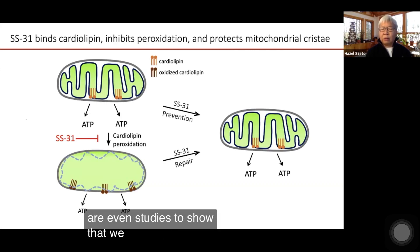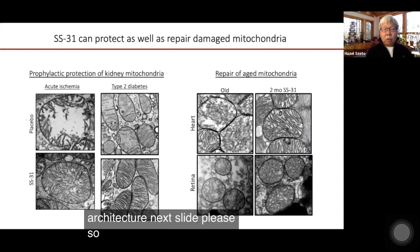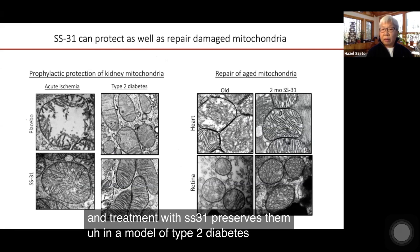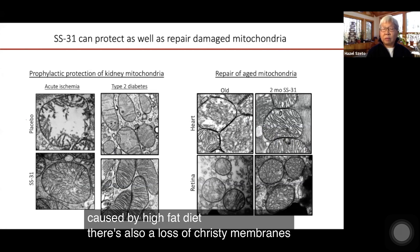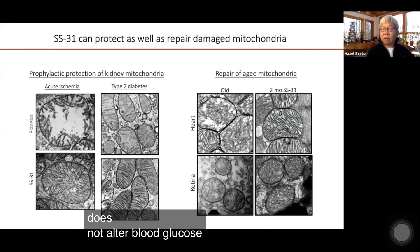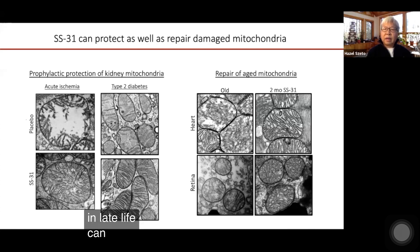There are studies showing that treatment with SS31 can prevent cardiolipin oxidation and loss of cristae membranes, and even repair the loss of cardiolipin in aging animals and restore normal mitochondrial architecture. On the left side, prophylactic protection of kidney mitochondria in ischemia shows that SS31 preserves cristae membranes. In a model of type 2 diabetes caused by high-fat diet, cristae membranes in kidney tubular mitochondria are also preserved with SS31, even when SS31 does not alter blood glucose levels. On the right side, aging studies show that two months of SS31 treatment started in late life can restore cristae architecture.